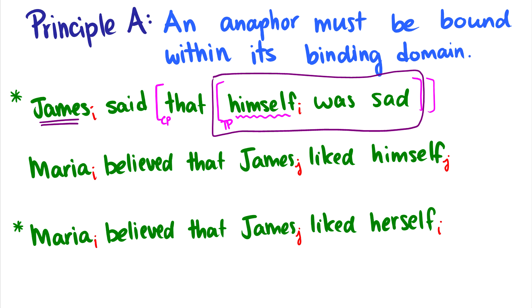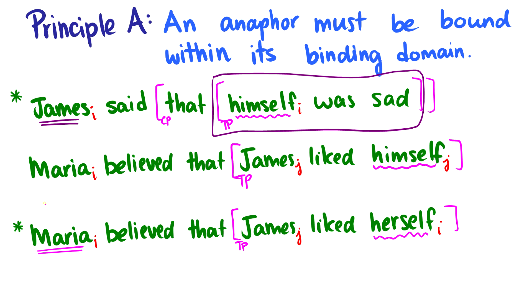What about the sentence 'Maria believed that James liked himself'? This is okay because 'James liked himself' is the inner TP, and 'himself' is bound by 'James' inside of that TP — so it's bound within its binding domain. Why can't we say 'Maria believed that James liked herself'? 'James liked herself' is a TP, and the binding domain of 'herself' is just that TP. But 'herself' is co-indexed and bound by 'Maria,' which is outside of its binding domain. Therefore, the sentence becomes ungrammatical.